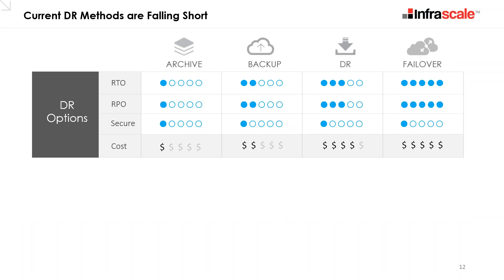People often evaluate DR options — archiving, backup, and failover — based on RTO, RPO, security, and cost. RTO, or recovery time objective, refers to how long it takes to recover data and return to service — the time the system is unavailable. RPO, or recovery point objective, refers to the amount of data at risk — determined by time between protection events, reflecting how much data could be lost during a disaster. These metrics guide what kind of solution you need.